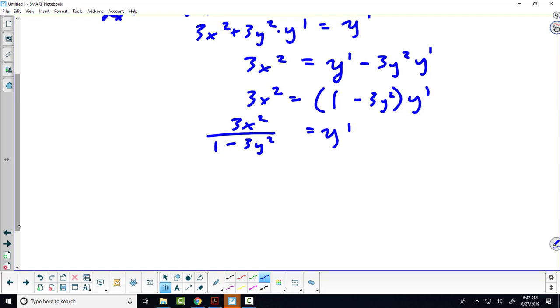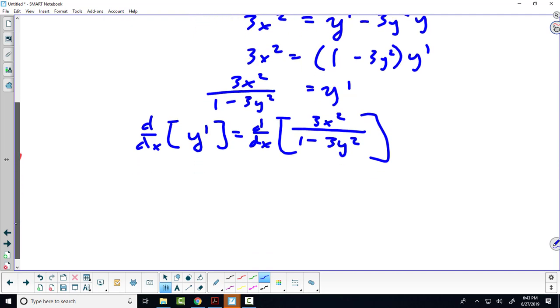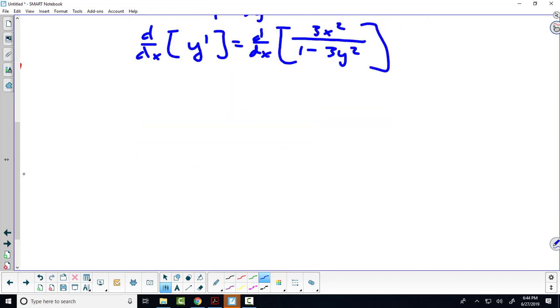Now we're going to find the second derivative. I'm going to take the derivative of both sides again. I changed the order on that just because I wanted the y double prime on the left. What do I get when I take the derivative of y prime? We get y double prime.